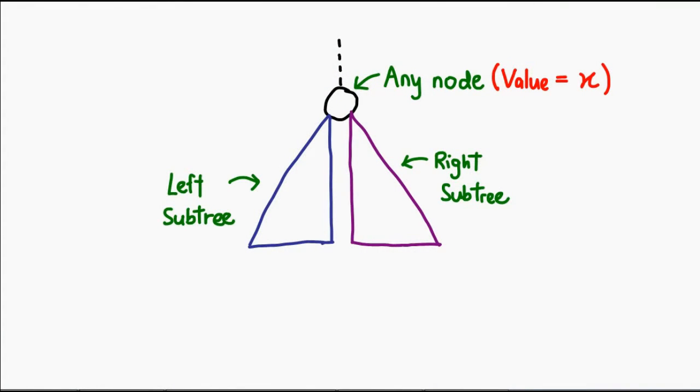Binary search trees also have an additional property. The property can be stated as such: If I were to inspect any node within the tree, essentially all nodes in its left subtree will have values smaller than the node I've picked. All values in the right subtree should have a value that is greater.